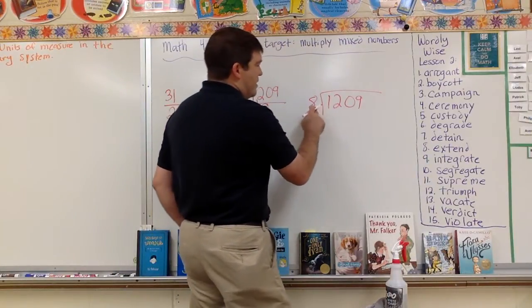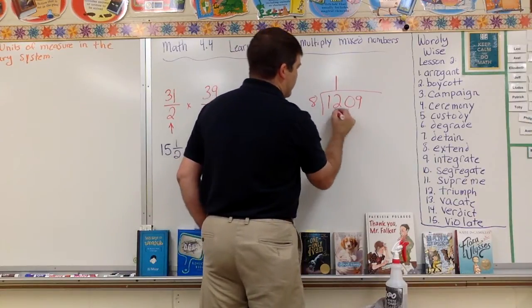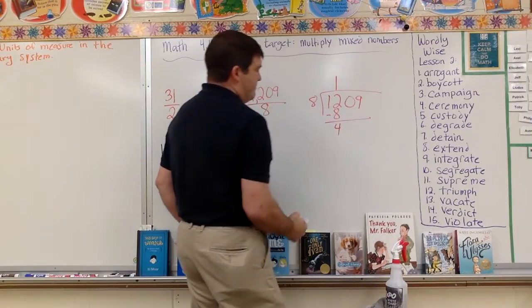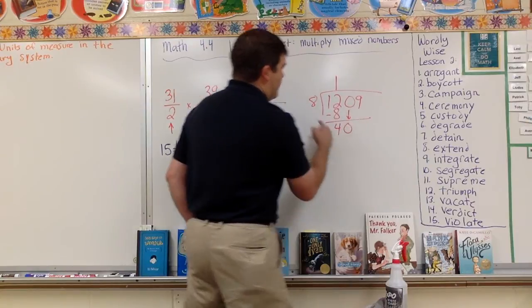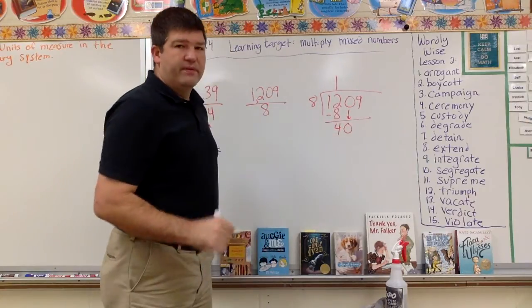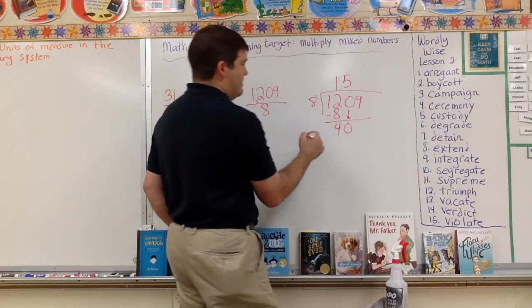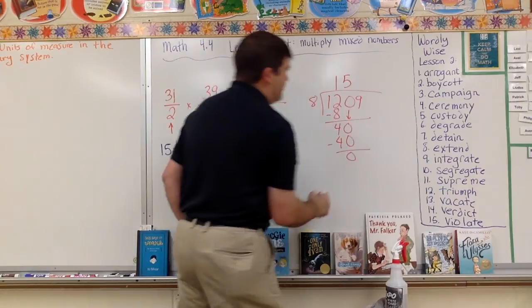Eight does not go into one, but eight goes into twelve. One time. One times eight, eight. Subtract that out, I get four. Now I go to my next. Bring down my zero. How many times does eight go into forty? Five times. Five times eight is forty. Subtract it out, I get zero.